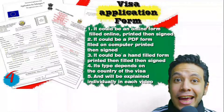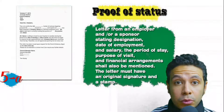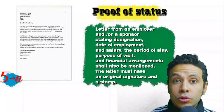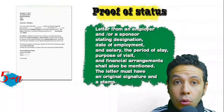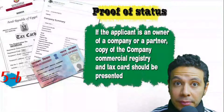In most visa application processes, you will need to provide proof of status. If you are an employee, provide a letter from your employer or HR department mentioning your name, work details, salary, address, and contact numbers. All letters must have an original signature and stamp. If you own a business, your commercial registry and tax card must be presented.